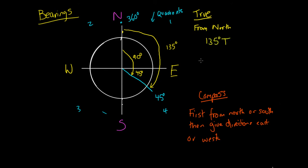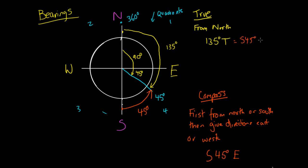It's 135 degrees away from north. Now for a compass bearing, we first choose whether we're closer to north or south. We're in the bottom half, so we're definitely closer to south. Then we give a direction east or west. Going to our south half and moving 45 degrees towards east, we only have to move 45 degrees because we've already indicated south. So this compass bearing is south 45 degrees east. So 135 degrees true equals south 45 degrees east — these are equivalent bearings. The orange line is the compass bearing and the yellow is the true bearing.